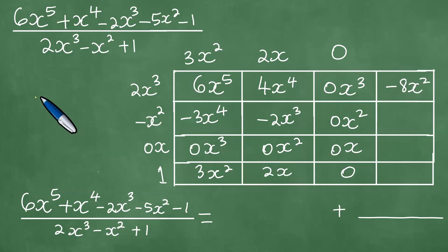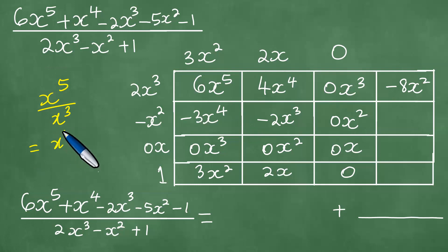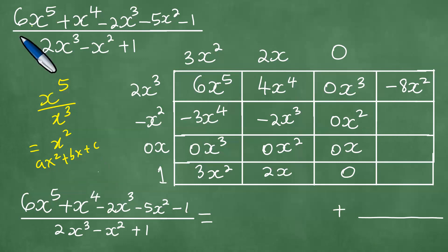In passing, this method is called the box method, also known as the area model or the generic rectangle method of polynomial division. We are dividing a polynomial of degree 5 by x cubed, so the quotient is of degree 5 minus 3, which equals 2 — a quadratic.